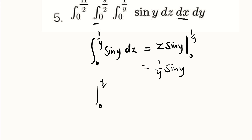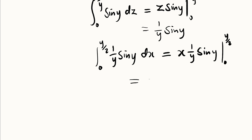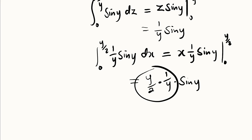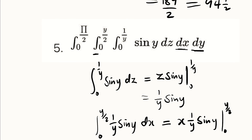Integrating (1/y)·sin(y) with respect to x from 0 to y/2: since the integrand has no x, we multiply by x, giving x·(1/y)·sin(y) from 0 to y/2. Substituting x = y/2: (y/2)·(1/y)·sin(y) = ½·sin(y). The lower bound gives zero. Our new function is ½·sin(y), which we integrate with respect to y from 0 to π/2.